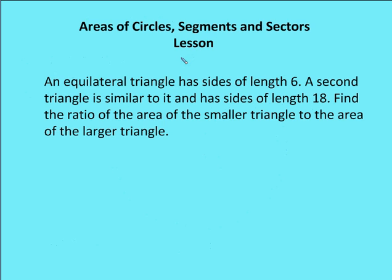Now another problem: you can pause this video and work it out on your own. Find the ratio of the areas of two equilateral triangles. The first equilateral triangle has a side length of 6, and the second similar triangle has side lengths of 18. Find the ratio of the area of the smaller triangle to the area of the larger triangle.